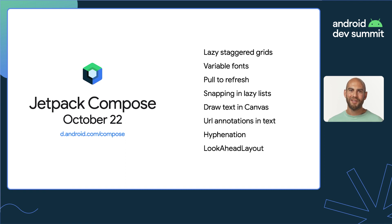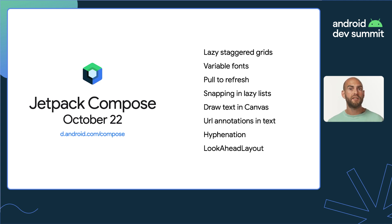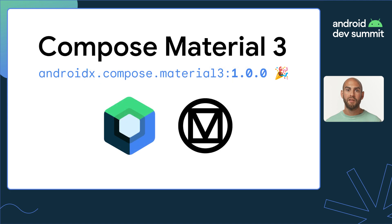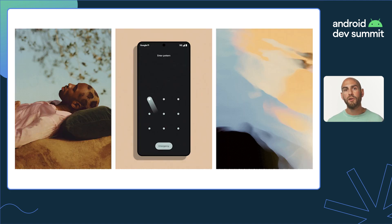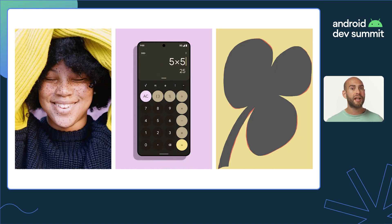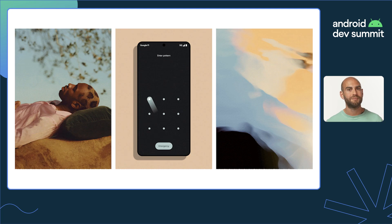First up is a whole heap of Jetpack Compose updates. Compose version 1.3 hits stable, bringing support for staggered grids, snapping behaviors, pull to refresh, drawing text directly to Canvas, and many bug fixes and performance improvements. It also includes the first stable release of the Compose Material 3 library, helping you build fresh, beautiful apps with updated components and styling.